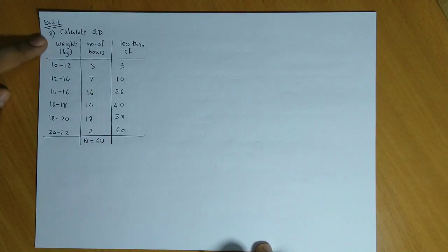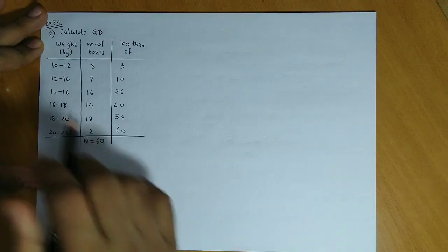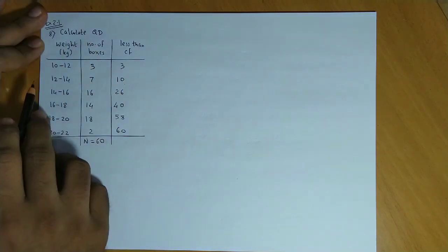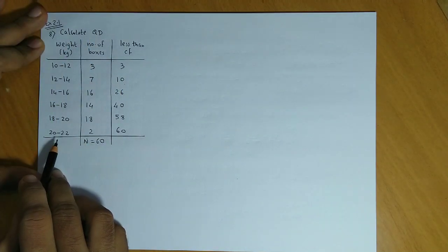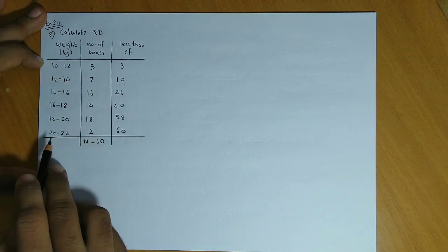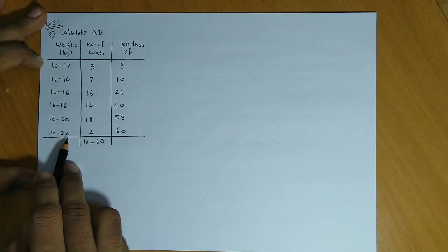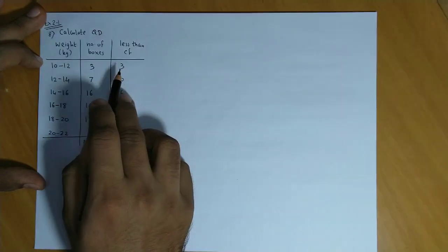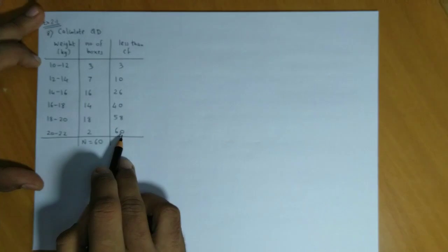We now discuss question number 8 from exercise 2.1. We have to calculate QD for the given grouped data. Weight ranges from 10 to 12, 12 to 14, up to 20 to 22. The frequencies have been given and even the less than CF column has been mentioned.